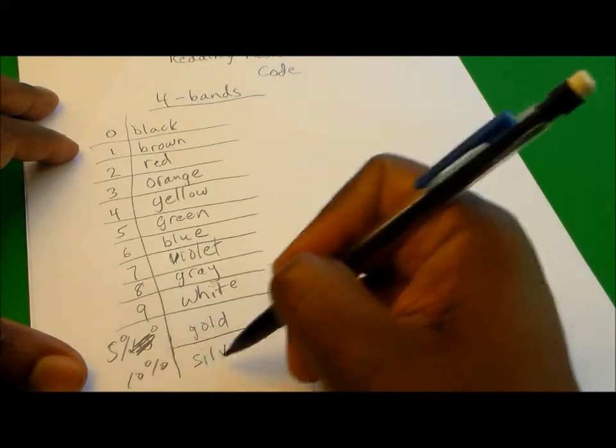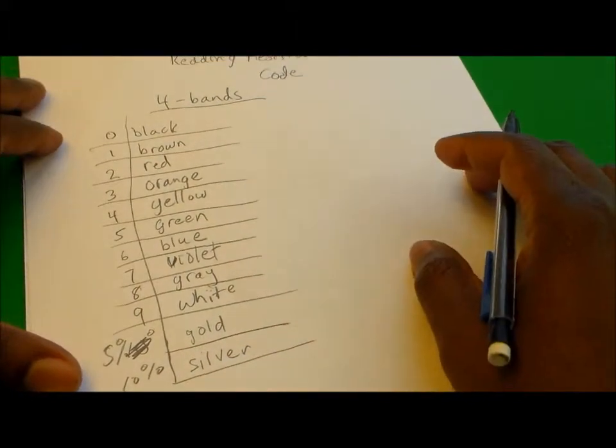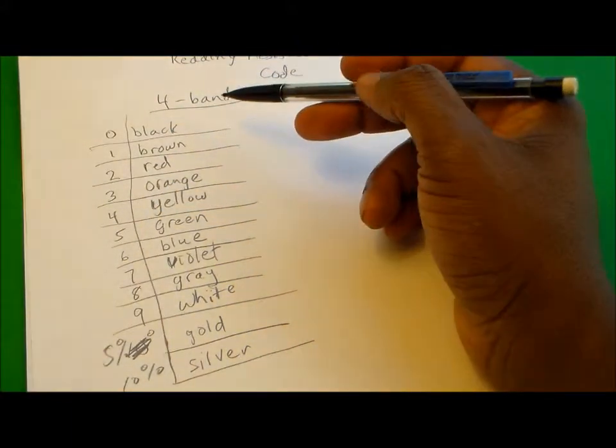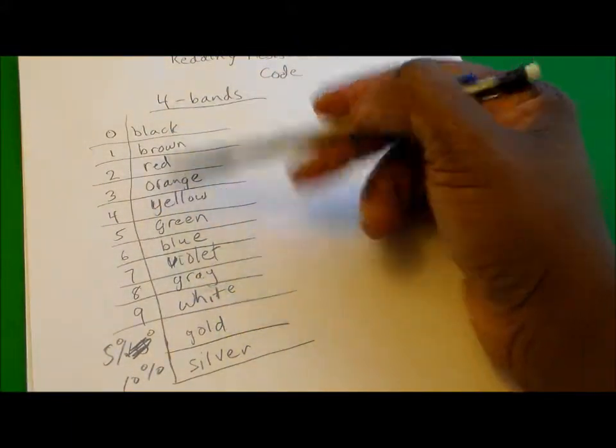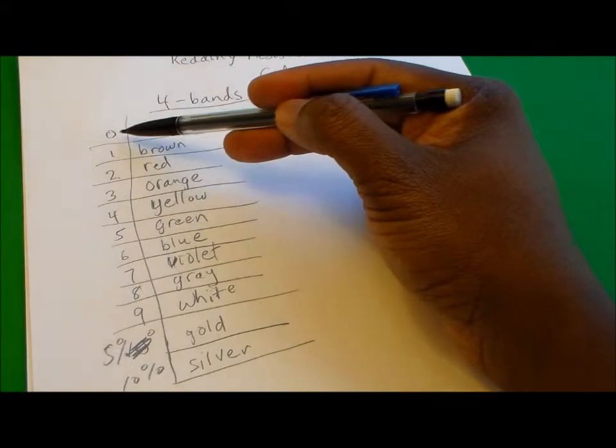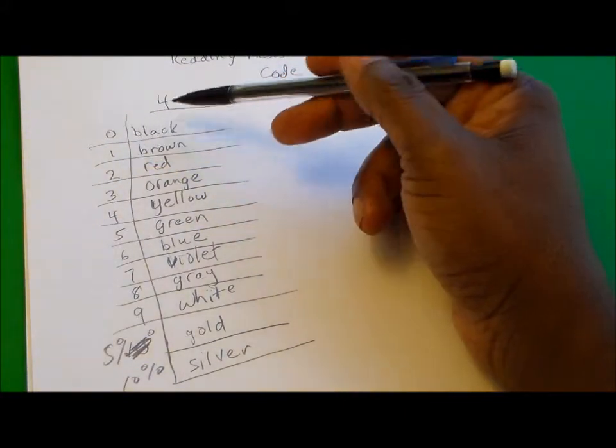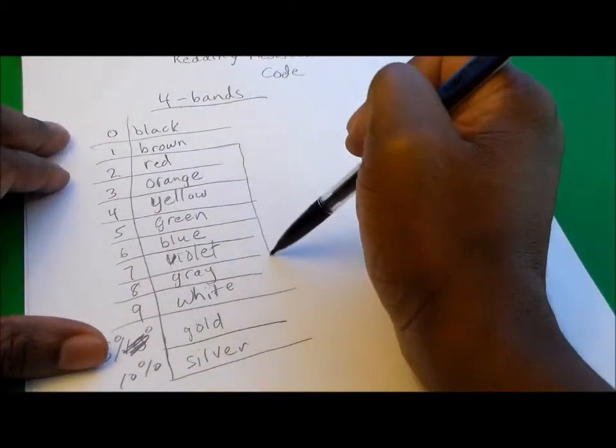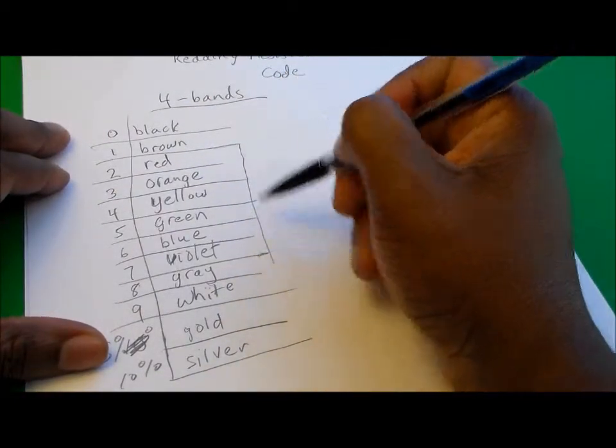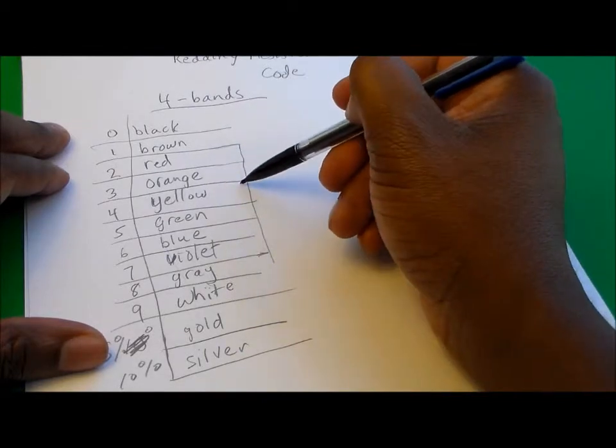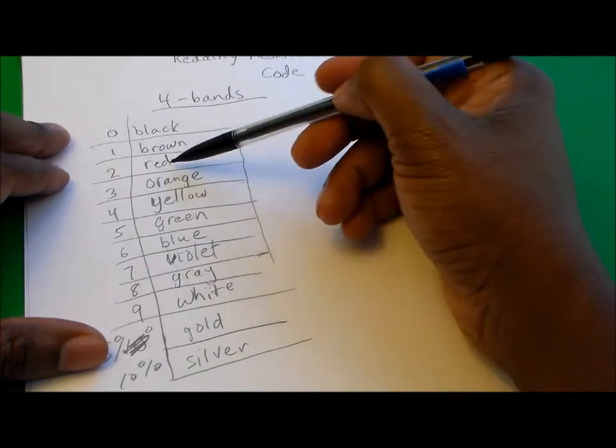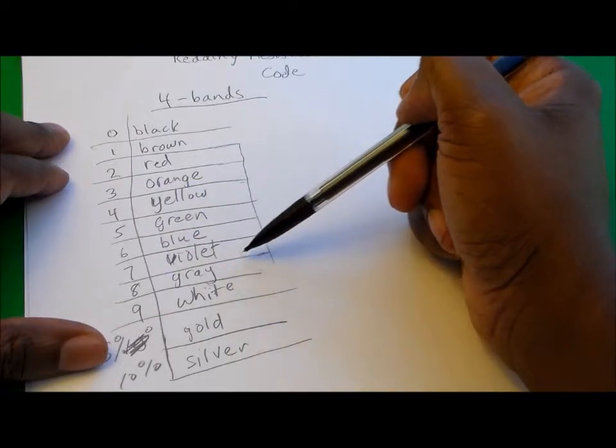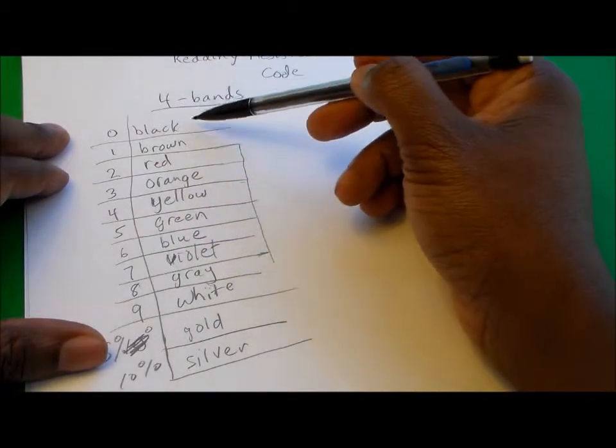People have different ways of remembering the color codes and associating these colors with the numbers. What I like to do is from red down to violet, those are the colors of the rainbow in that order: red, orange, yellow, green, blue, violet.